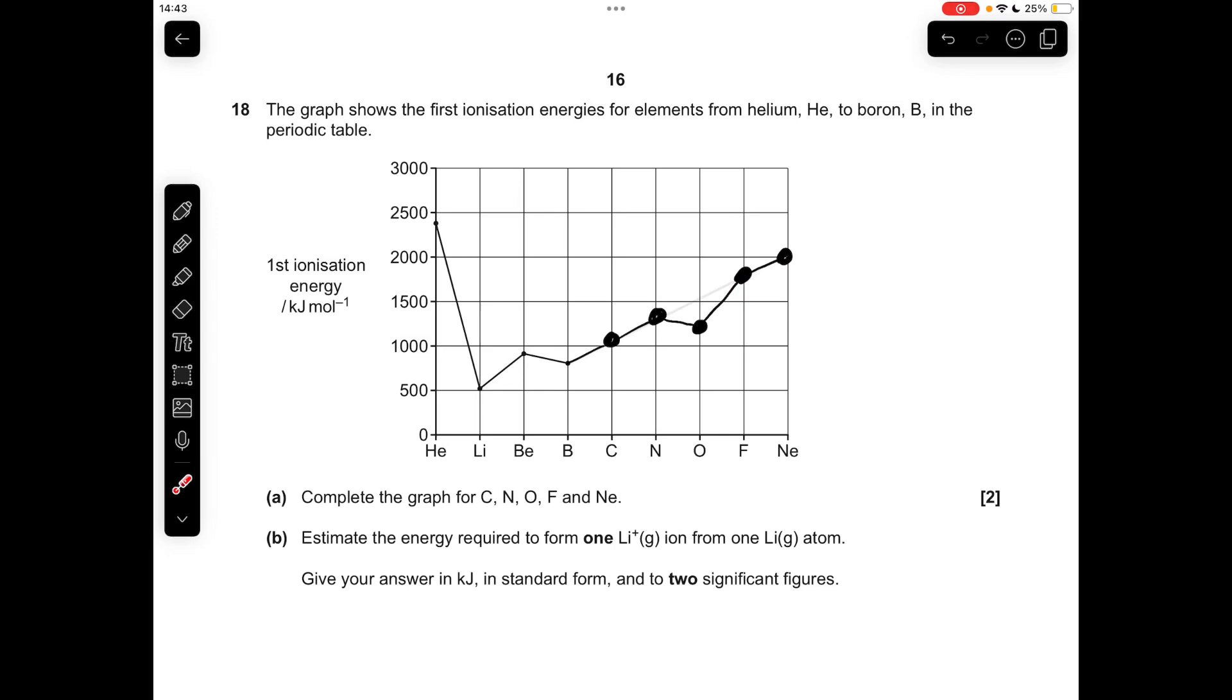So you can see I've already plotted the graph, I'll just quickly explain it. So going across period 2, we've got a general increase in first ionization energy. Just remember that oxygen is another one of the sort of rogue ones, a bit like boron.